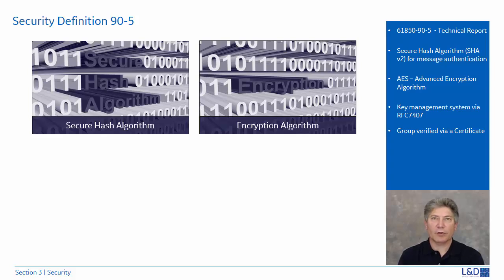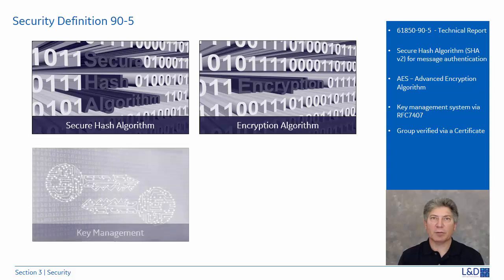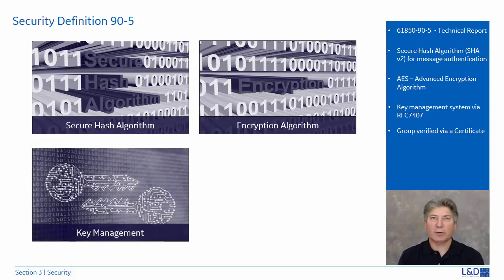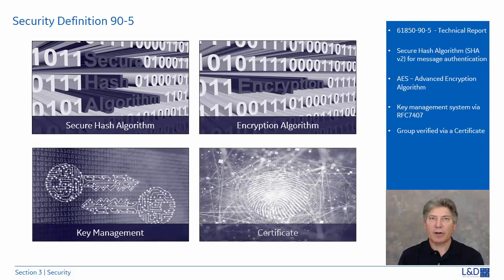The technical report also defines a key management system. Using RFC 6407, the Group Domain of Interpretation, the system manages the keys to all members in the group — meaning the publishers and subscribers. This key is also incorporated when generating hash and encryption algorithms. It also defines that the group members are issued a certificate once they have been verified for authorization and authenticated as valid members in the group.